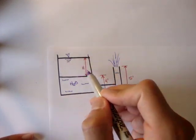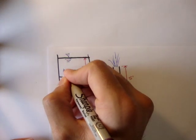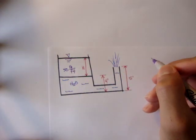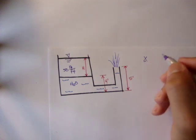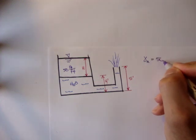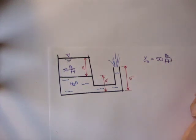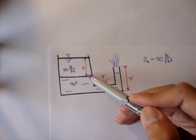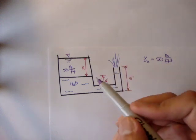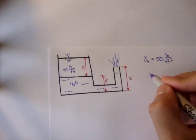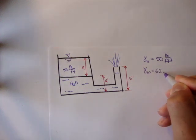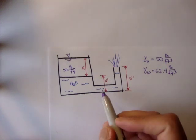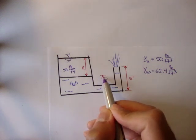We have this unknown liquid here, but they give us the specific weight of this liquid — it's 50 pounds per foot cubed. The depth of the unknown liquid is height h. And then after the unknown liquid, we have water. We know the specific weight of water is 62.4 pounds per foot cubed. The height of the water from the bottom of the tank up to here is 4 feet.